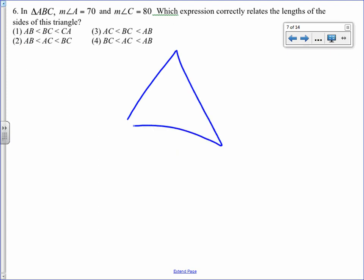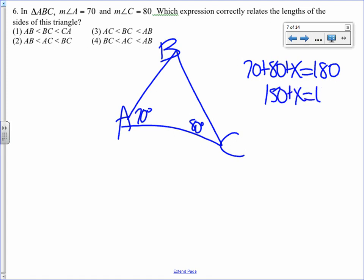Draw a picture. A is 70, C is 80. It doesn't have B, so to find B I'm going to do 70 plus 80 plus X equals 180. I'm going to solve the equation and I get 30. To put the sides in order I would first have to determine the order of the angles. Being how they're only giving me the angles, well the smallest angle is 30, so the smallest side is opposite from that.